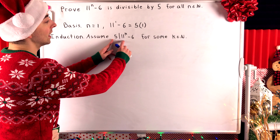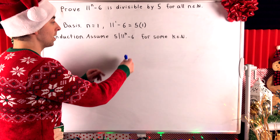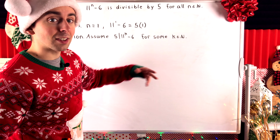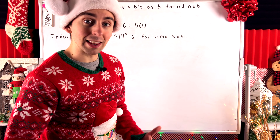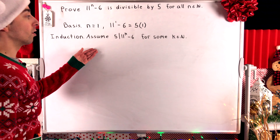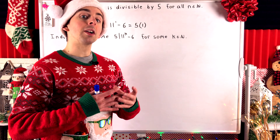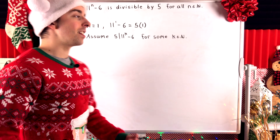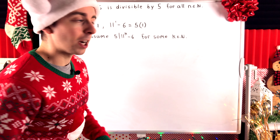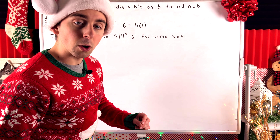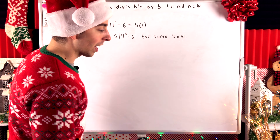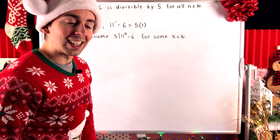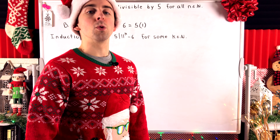How does induction work? We want to prove that 11 to the power of n minus 6 is divisible by 5 for every natural number n. To prove this by induction, we begin with what's called the base case or the basis step. People often say it's like knocking over a set of dominoes — I think that's the best analogy for induction. The basis step is proving that we can knock over the first domino, get onto the first rung of the ladder, proving that the statement is true for the first number of interest.